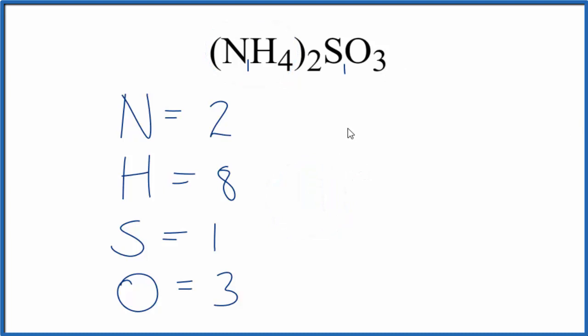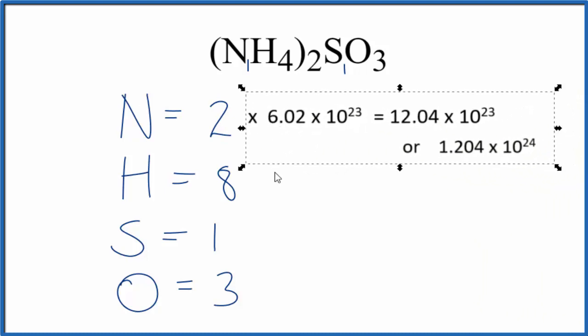Sometimes you're asked to figure out how many atoms, let's say nitrogen atoms, there are in 1 mole. To do that, we find the number of nitrogen atoms. We found there were 2. You multiply that by Avogadro's number. And when you do that, you'll find that you have 2 times 6.02 times 10 to the 23rd. That gives you the total number of nitrogen atoms in 1 mole.